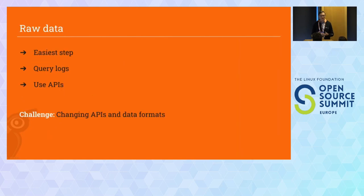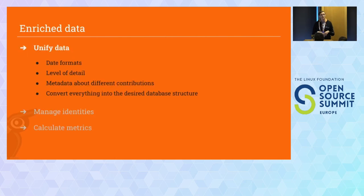Getting the raw data is almost the easiest step — there are APIs, archives, and ways to access it. The challenge is that if the source changes, we have to change our tooling. If you use an open source tool, you don't have to do it alone — there's a community around you that helps. Enriching the data is where we make more of it: unifying date formats, choosing the level of detail. If we get a git commit, are we just interested in who did what when, or also how many lines were changed? We need to think about what information we collect, store, and what metadata and context we keep.